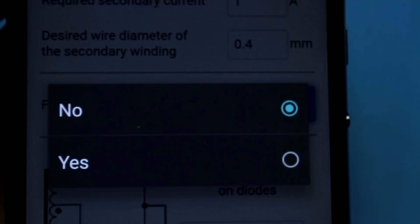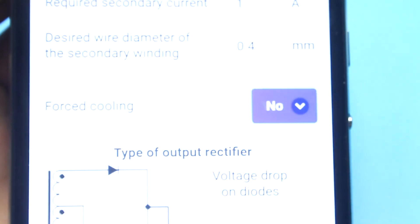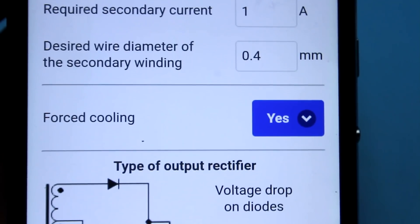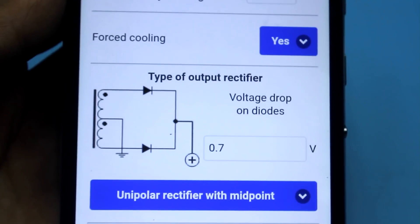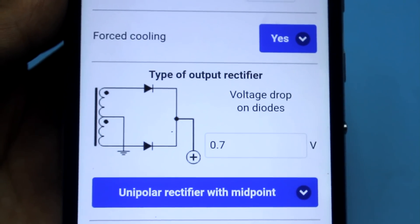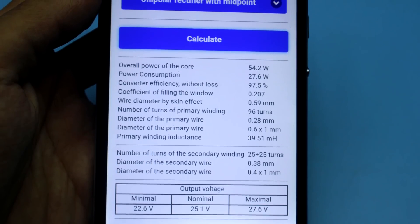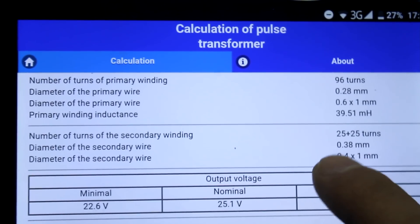When calculating, it is important to indicate the presence of active cooling or a fan. With a fan, more power could get from the transformer. The program provides optimal winding data, which of course depends on the core itself, the operating frequency of the generator, and the presence of active cooling.